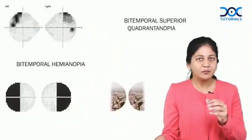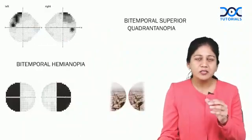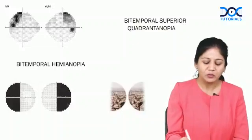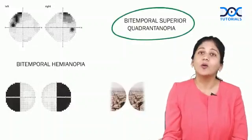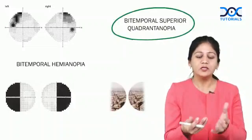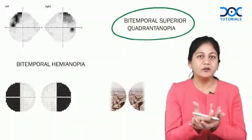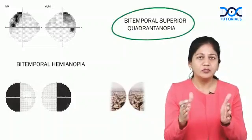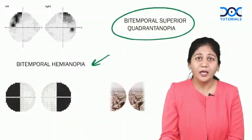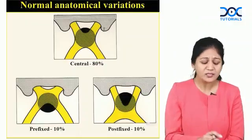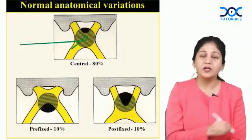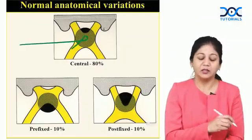When you have compression of inferonasal fibers, you first get a bitemporal superior quadrantanopia. Later on, if you have a bigger tumor, it will compress the central part and all the fibers, and what you get is bitemporal hemianopia. This is when your chiasma is in a central position.